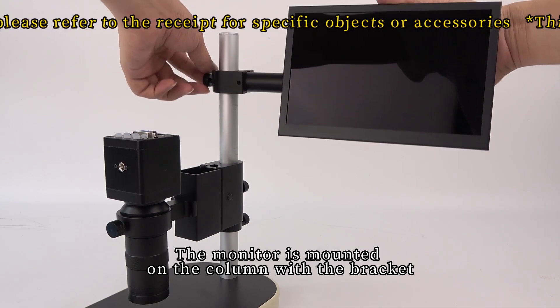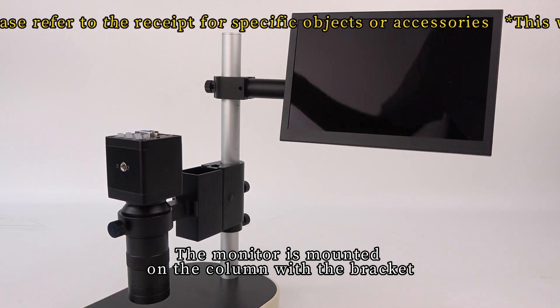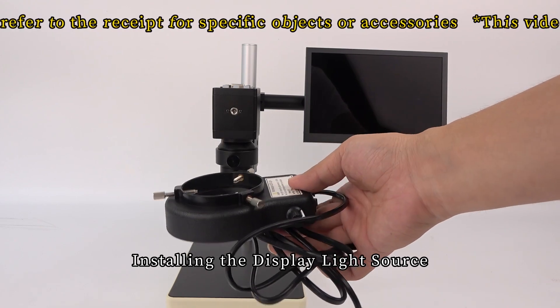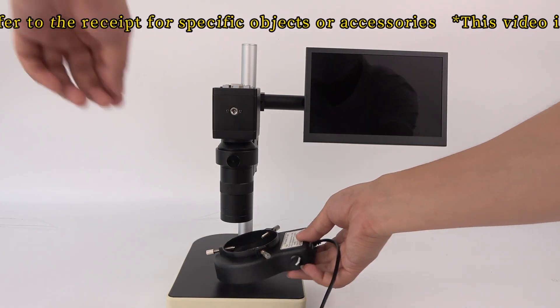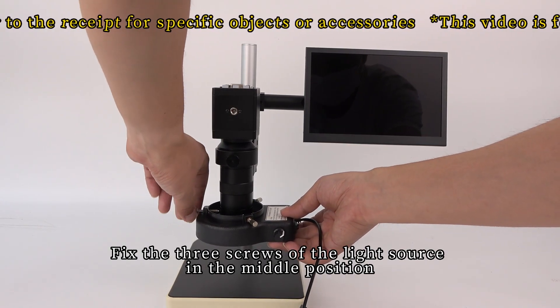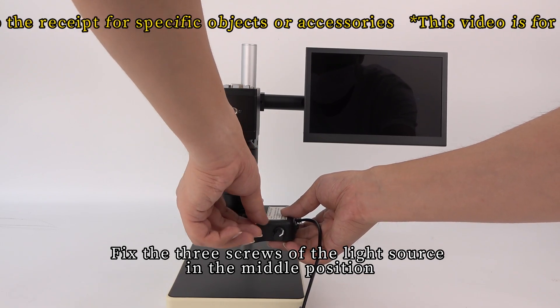The monitor is mounted on the column with the bracket. Install the display light source. Fix the three screws of the light source in the middle position.